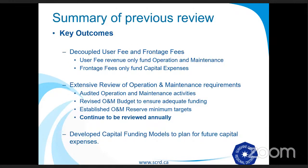So some of the key outcomes of this review were that we've decoupled the user fees and frontage fees, such that user fee revenues only fund operation and maintenance, and frontage fee revenues only fund capital expenses. The extensive review of operation and maintenance requirements, including an audit of activities, resulted in a revised operation and maintenance budget to ensure adequate funding. We also established minimum operation and maintenance reserve targets. This is an ongoing process that will be reviewed annually. We also developed a capital funding model to help us plan for future capital expenses, and that's kind of where we're going today.